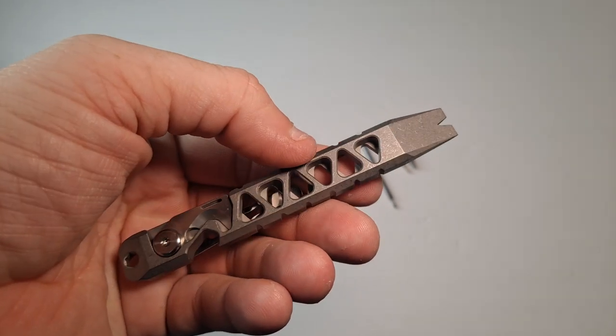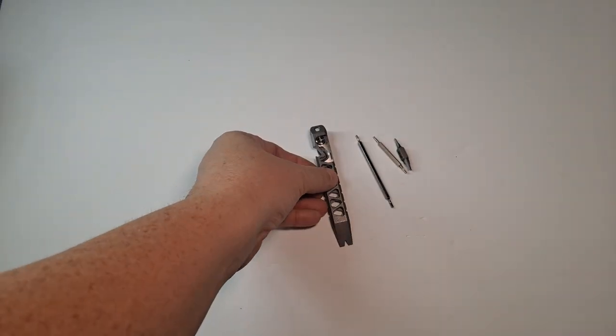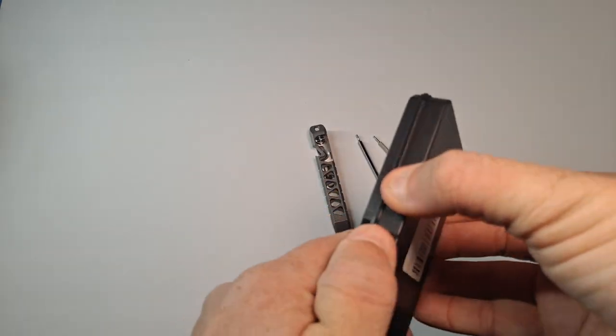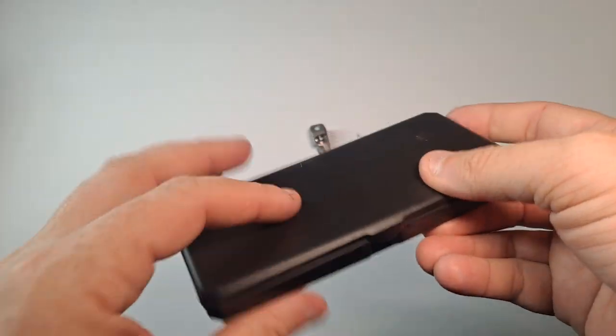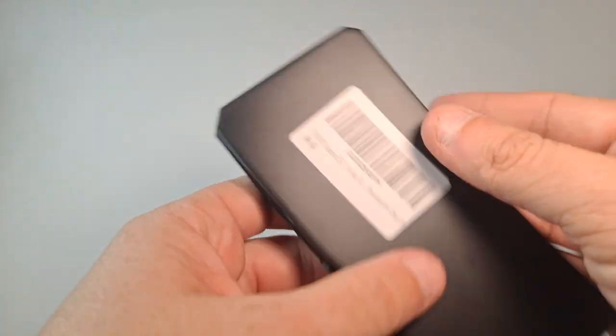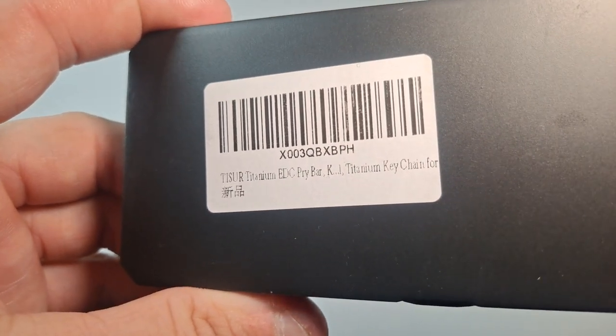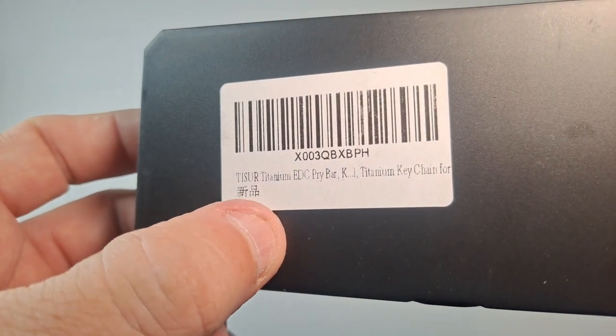It actually comes with a plastic case with all weird things. Alright, sorry for the pause there. It comes with a plastic case, which is really odd because the case is much larger. This is the case it comes with. Just a cheap little plastic case with foam on the inside. So it does say Tysor Titanium EDC Pry Bar K1 Titanium Key Chain 4, whatever that means. So clearly it's made in China. And if you want a cheap case, it comes with it.